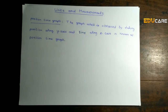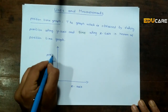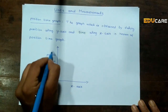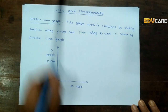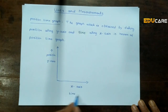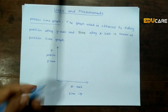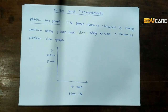Let us draw a graph of two coordinates containing the x and y axis. Here we take position along the y-axis and time along the x-axis. Then we can say that this is the position time graph.